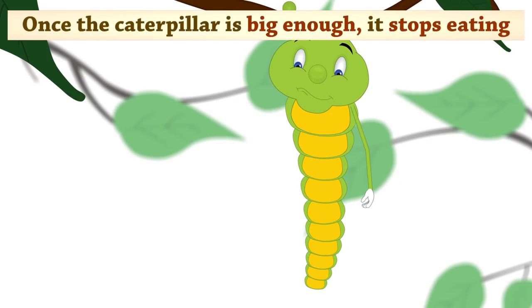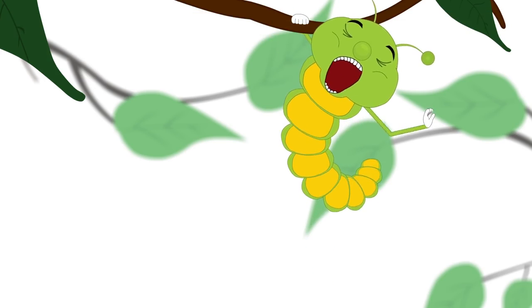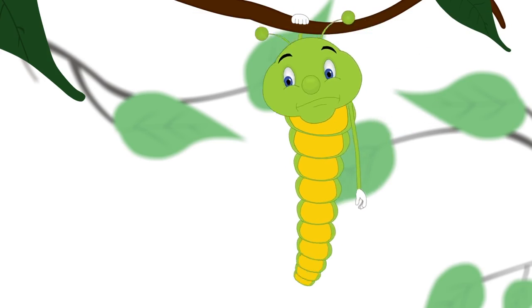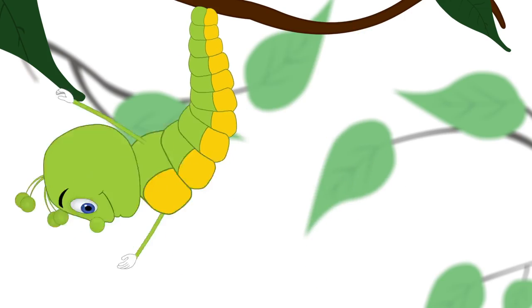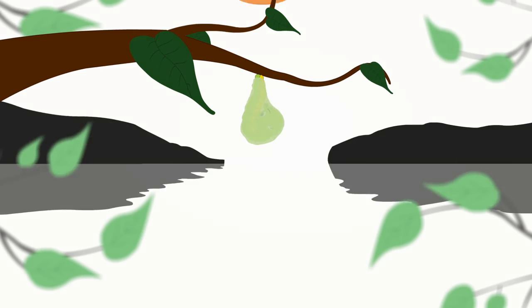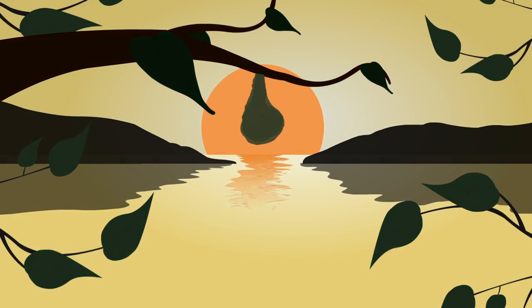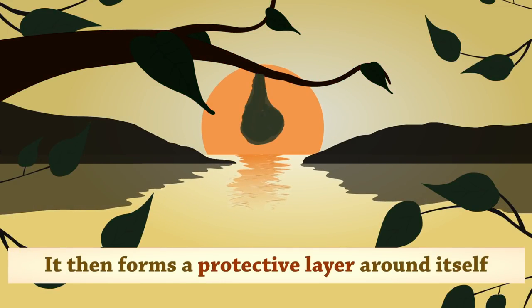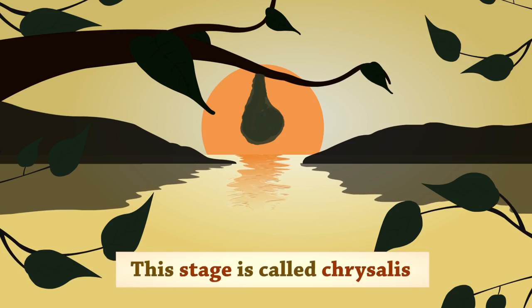Once the caterpillar is big enough, it stops eating. It then forms a protective layer around itself. This stage is called chrysalis.